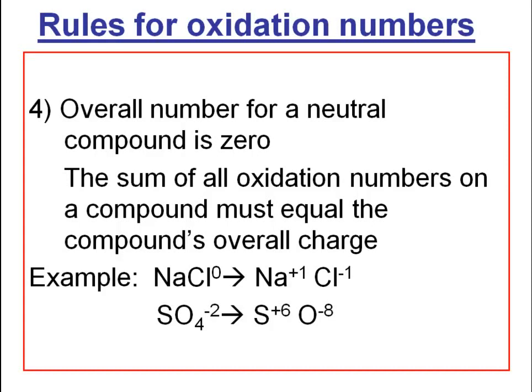How do we know sulfur is +6? Oxygen always has a −2 charge. There are four oxygens in the sulfate ion, so the overall oxidation number from the oxygens is −8. Since the sulfate ion has an overall charge of −2, sulfur can't be +8 — it has to be +6, because +6 plus (−8) equals −2.